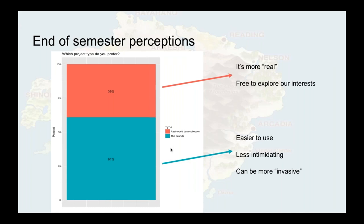You're probably interested in what students thought at the end of the semester. We asked which project type do you prefer. The Islands, shown in blue-green, represented 61% of students. Reasons they preferred it: they thought it was easier to use, they loved not having to leave their room to collect data, it was less intimidating since they're not interacting with other people, and they can be more invasive — they can ask islanders to do all sorts of things there's no way we'd let them do on real human beings. We did have 39% who preferred real world data collection — their response was it's more real, and they were free to explore topics that actually interested them.